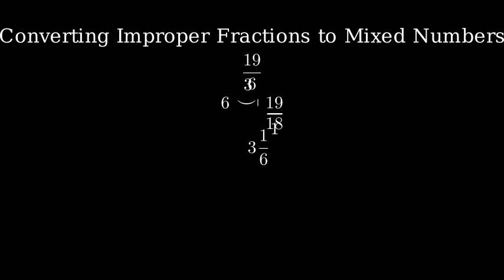Let's verify our answer by converting it back to an improper fraction. First, we multiply the whole number 3 by the denominator 6, which gives us 18. Then we add the numerator 1. 18 plus 1 equals 19.